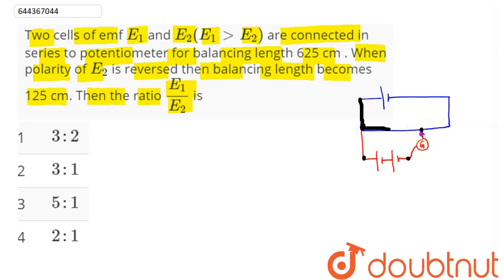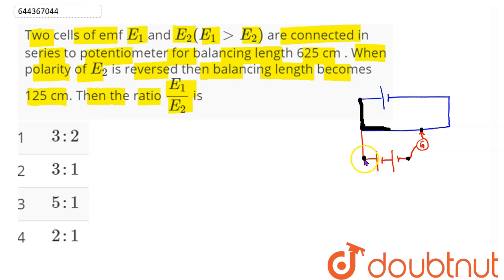In the balancing condition of a potentiometer, no current flows through the secondary circuit — all current in the primary circuit flows in the primary circuit itself. So the balancing length of 625 centimeters means the potential difference across 625 centimeters equals the potential difference across the two points, which is e1 plus e2.